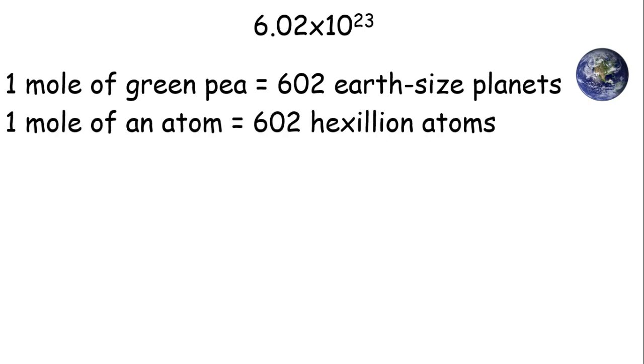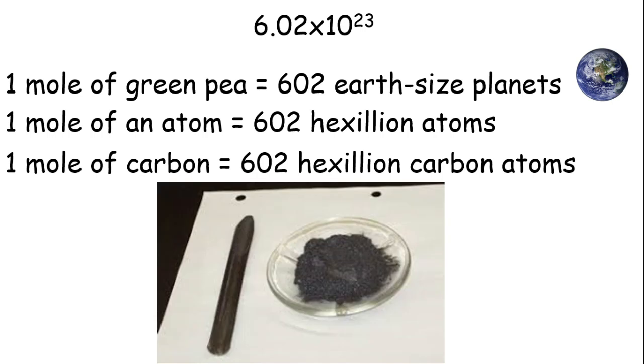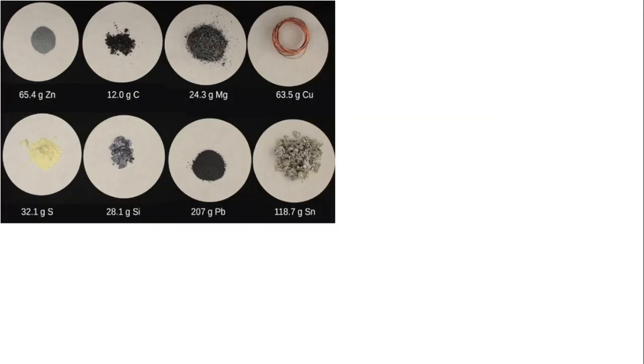A mole of green peas is equal to 602 earth-sized planets. However, a mole of atoms, even though it is equal to 602 hexillion atoms, it is not that huge. For example, one mole of carbon is equal to 602 hexillion carbon atoms. A mole of carbon can fit into a small petri dish. I have here a figure that shows a mole of different elements. So we have zinc, carbon, magnesium, copper, sulfur, silicon, lead, and tin.